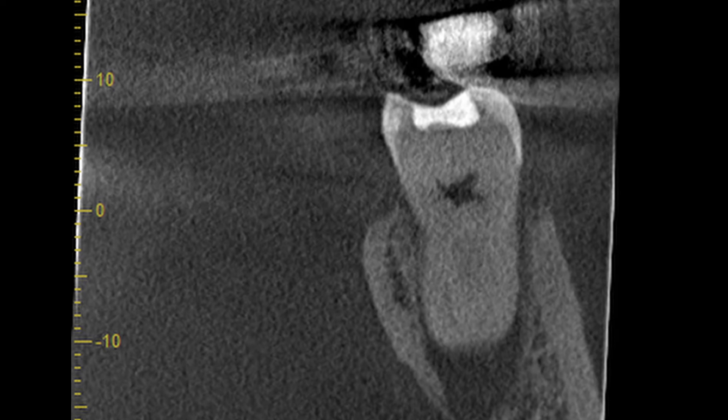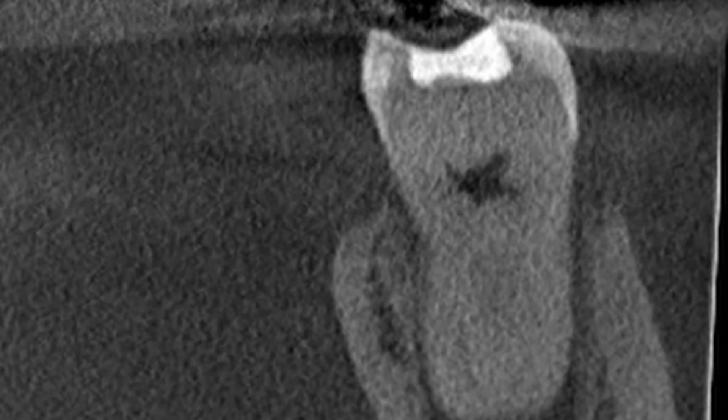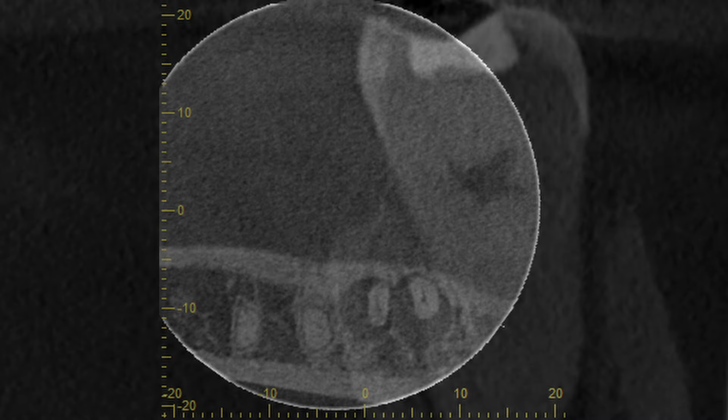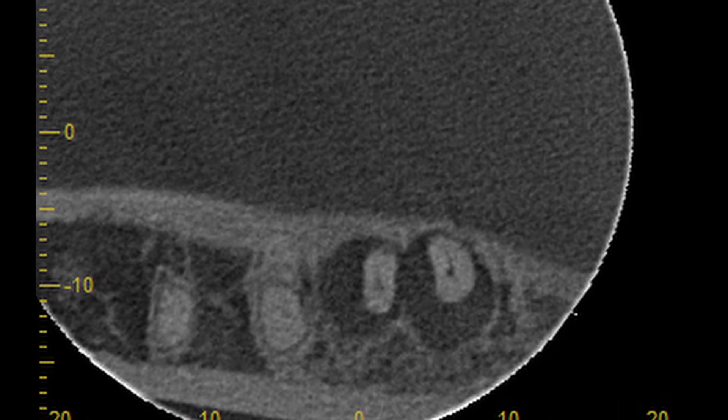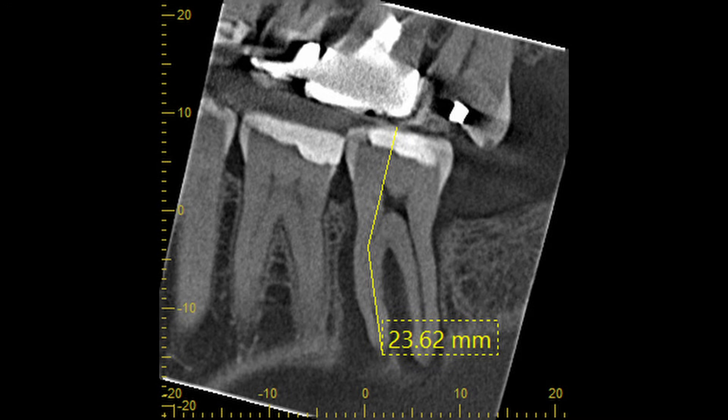On the coronal view, you can actually see the fracture in the occlusal area. And on the axial view, it looks possibly that distal root, maybe that's fractured or if that's just an artifact. Long root, they had long roots.